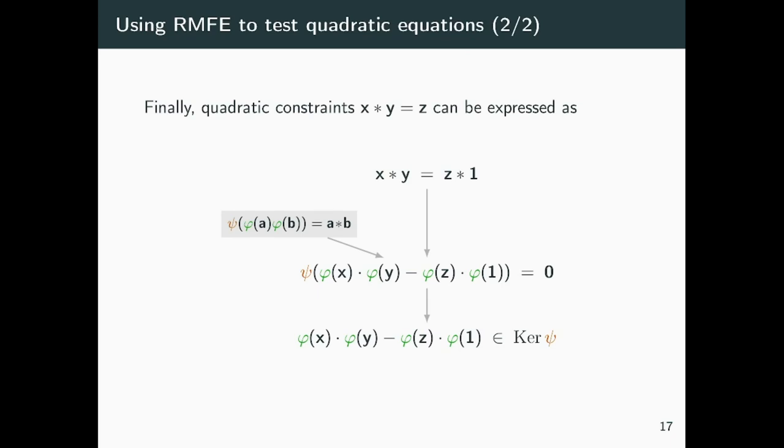Next, we also need to show how to check quadratic constraints over F2. Given x, y and z, vectors over F2, we want to check that the entrywise multiplication of x and y is equal to z. To use properly the property of the RMFE, we first use a little trick, observing that any vector z is equal to its entrywise multiplication with the vector containing all ones in each entry.